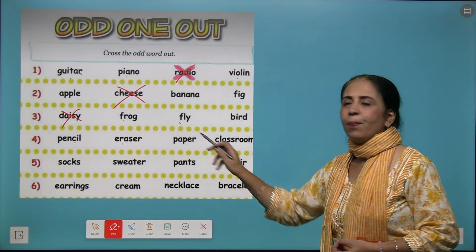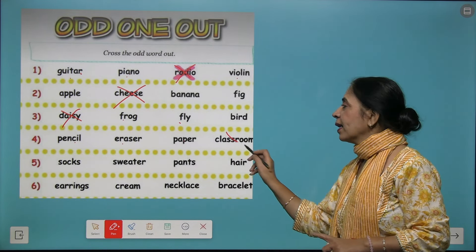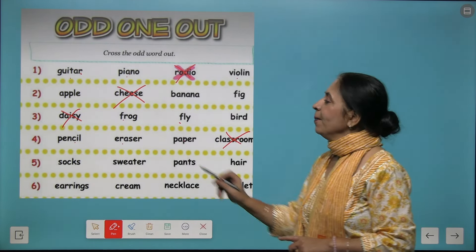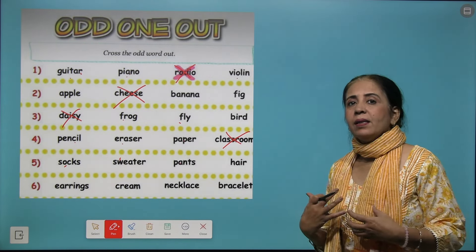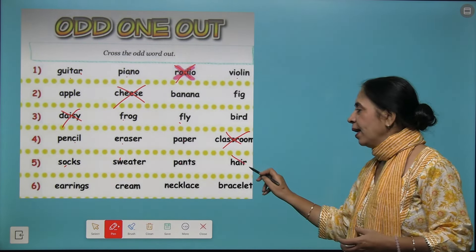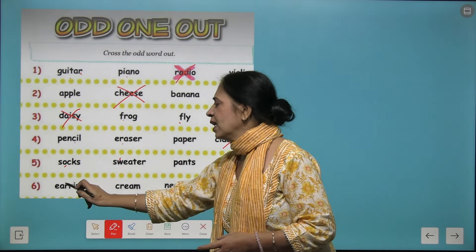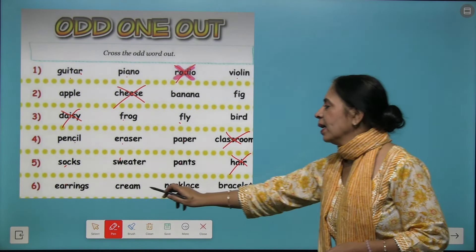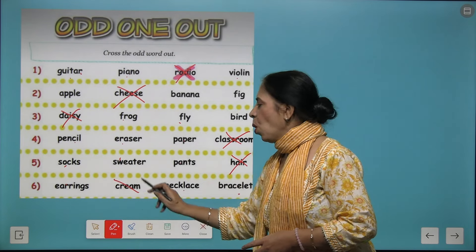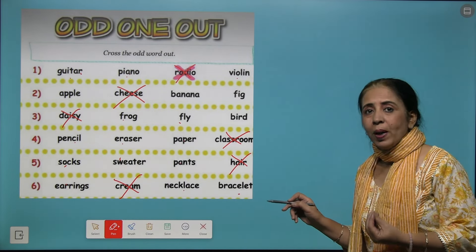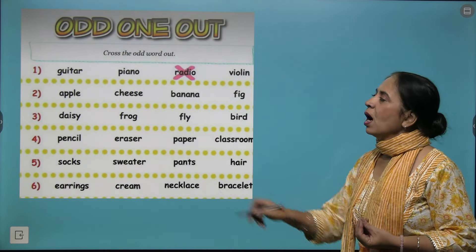Next: pencil, eraser, paper, and classroom. Pencil, eraser, and paper are all stationery items, while classroom is not stationery, so classroom is the odd one out. Next: socks, sweater, and pants — these are things you wear — along with a part of the body. So the body part is the odd one. Then: earring, cream, necklace, and bracelet. Earring, necklace, and bracelet are all jewelry or ornaments, while cream is not an ornament, so we pick out cream.